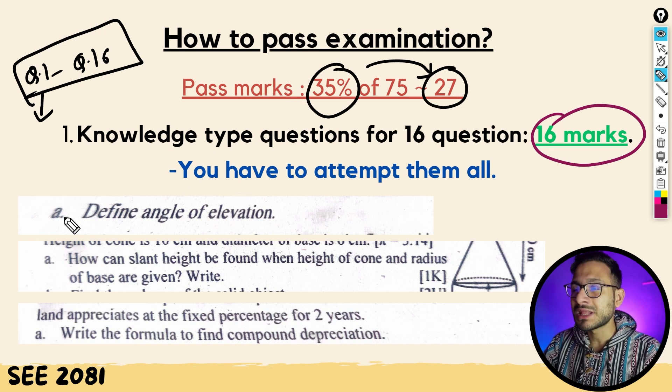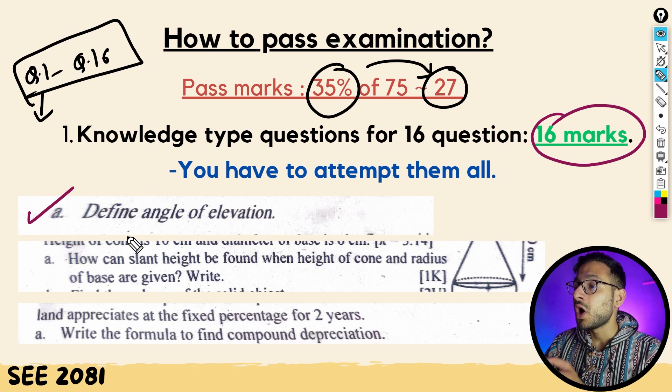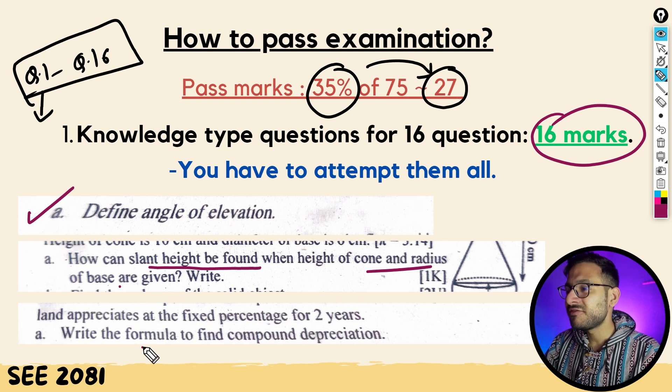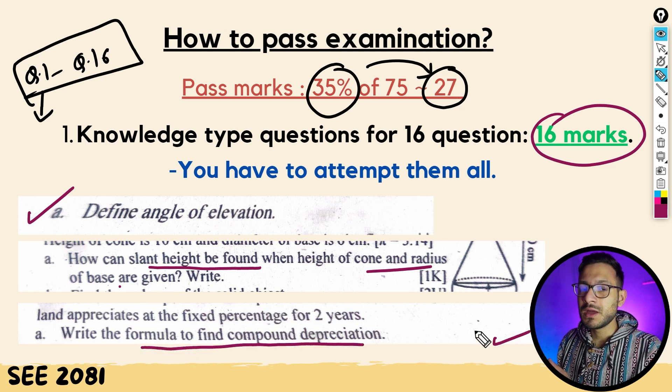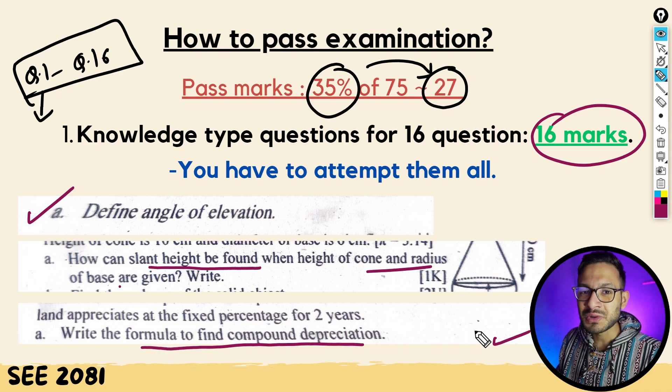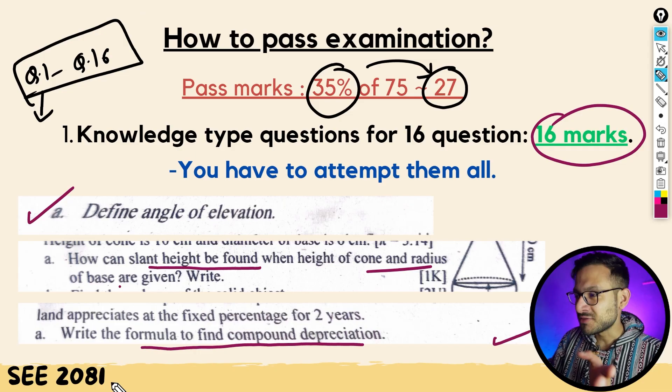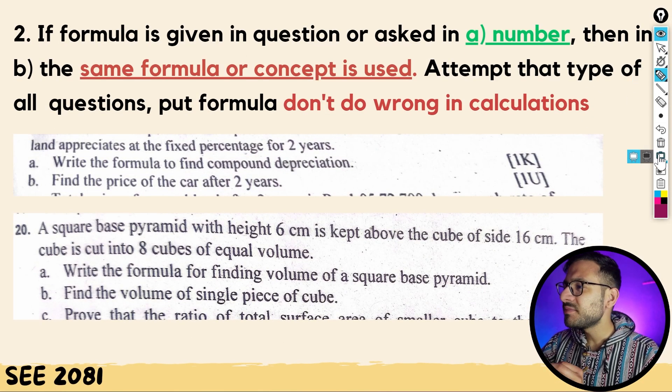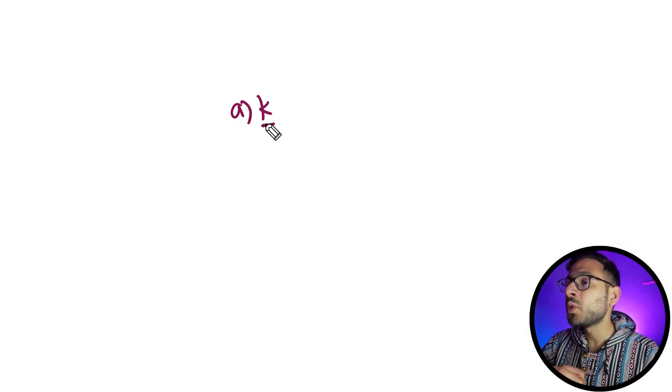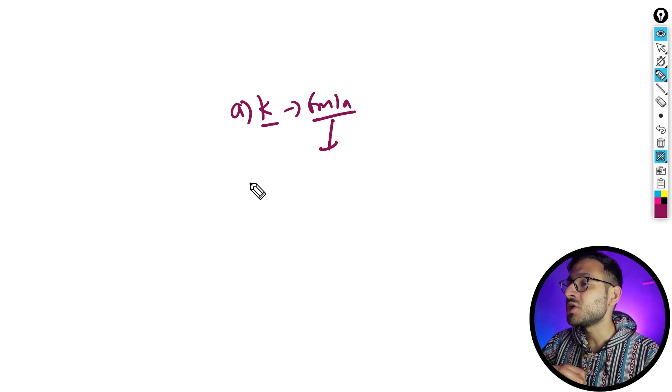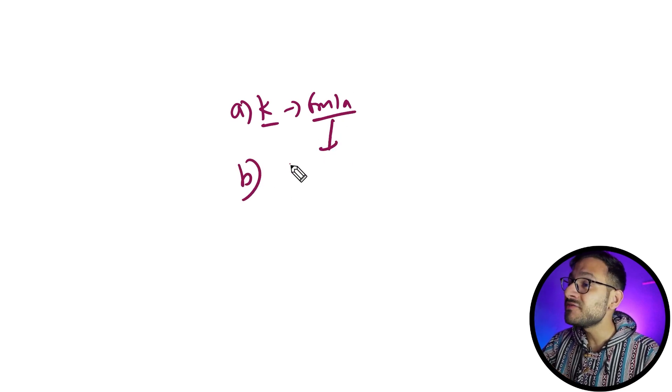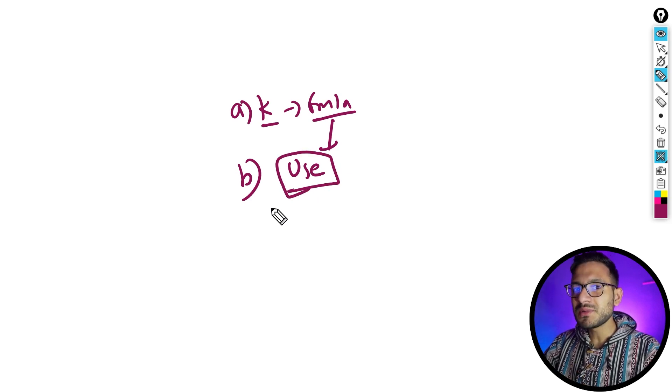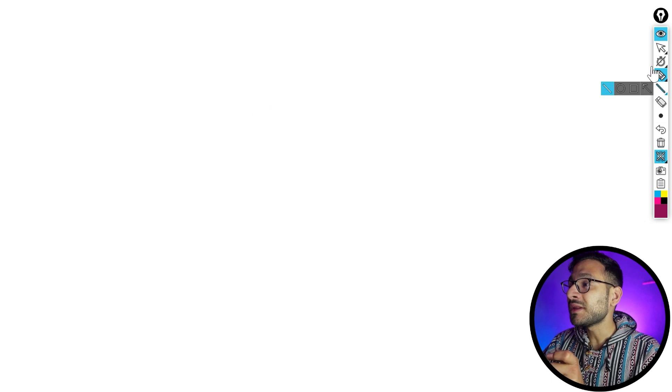Knowledge level questions from set books must be practiced. For example: define angle of elevation, find slant height when height of cone and radius of base are given, write the formula for compound depreciation. These are knowledge level questions with one-line answers. If you attempt these correctly, you can get 16 marks, which is 95% of the knowledge level questions.